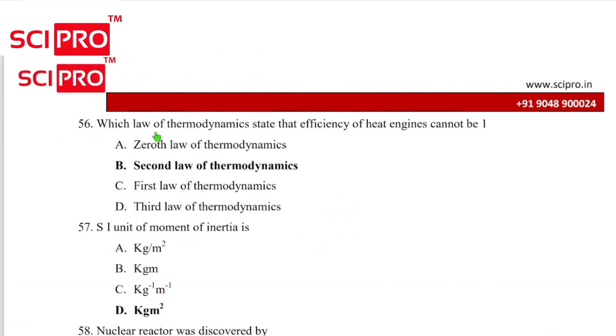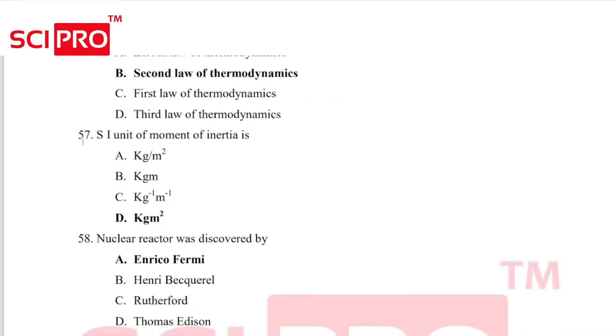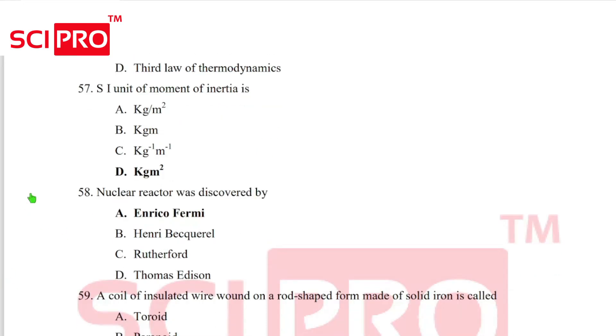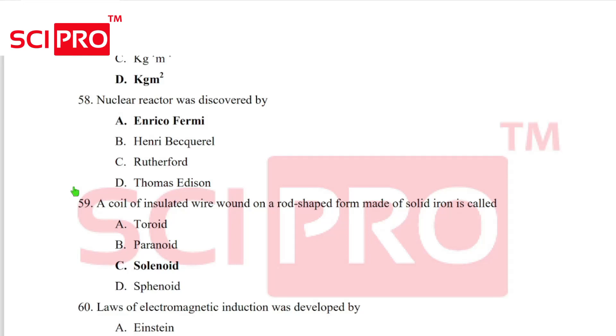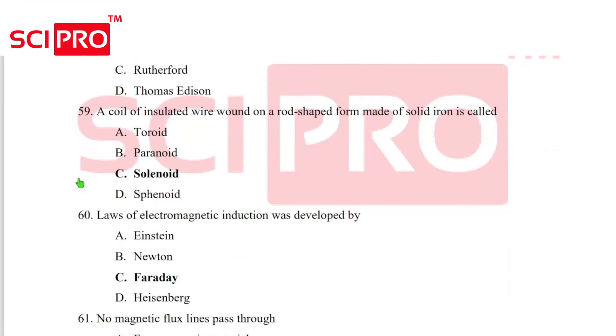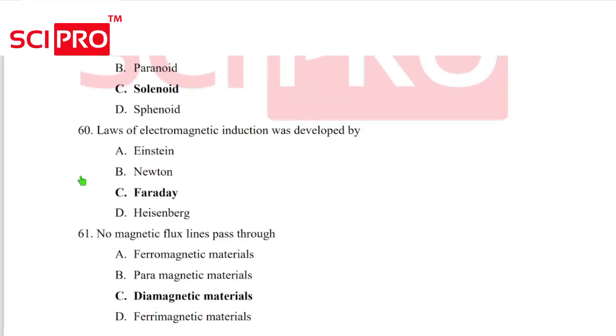Question number 56, which law of thermodynamics state that efficiency of heat engine cannot be one? Answer, second law of thermodynamics. Question number 57, SI unit of moment of inertia is answer D. Question 58, the nuclear reactor was discovered by Enrico Fermi. Question number 59, a coil of insulated wire wound on a rod shaped form made of solid iron is called solenoid. Question number 60, loss of electromagnetic induction was developed by Faraday.